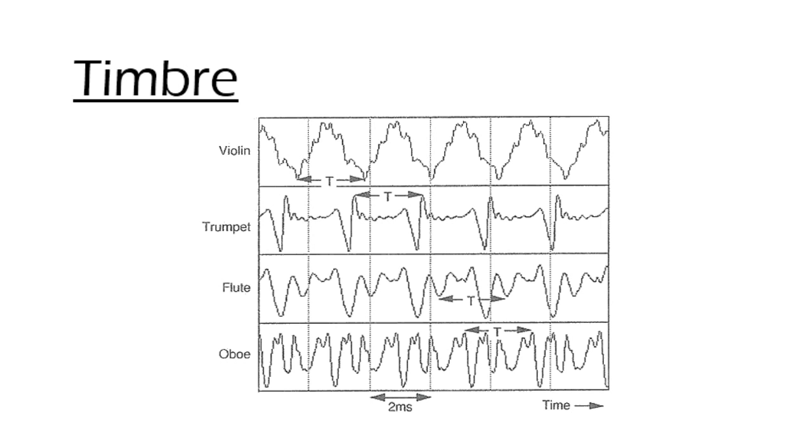Last, we have timbre, which allows us to distinguish between two musical instruments or between the voices of two people, even if they are playing or singing the same musical note. This is what musicians usually refer to as the color of the musical tone. The characteristic that defines this is the waveform and therefore its spectral content.